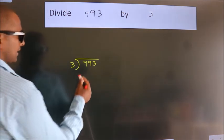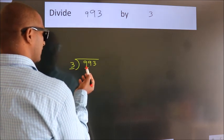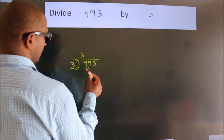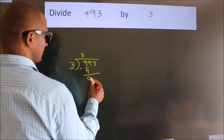Next, here we have 9, here 3. When do we get 9? In the 3 table, 3 times 3 is 9. Now, we subtract and get 0.